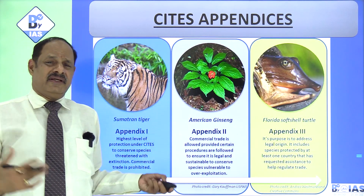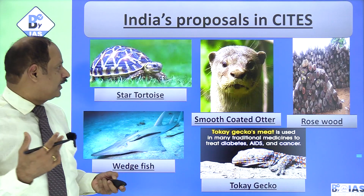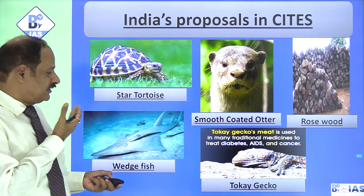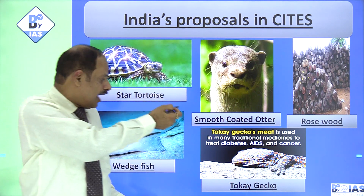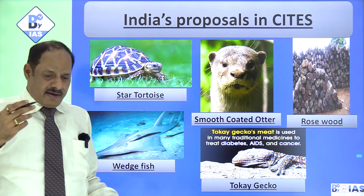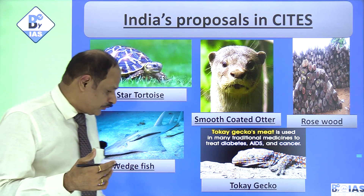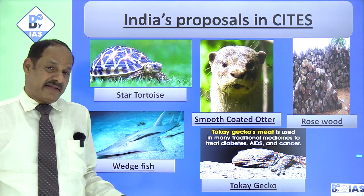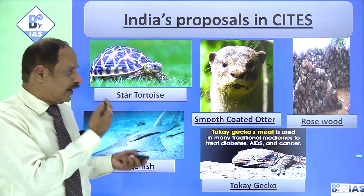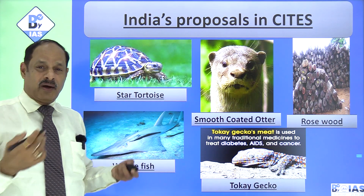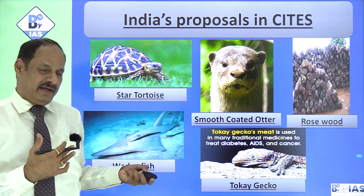Every country on an annual basis gives proposals to CITES to list their plant, animal, and other species. India's proposals to CITES include: the star tortoise, the wedge fish, the smooth-coated otter, rosewood, and the tokay gecko — which is important for its medicinal value, supposedly able to cure AIDS, diabetes, and even cancer. These five species become very important, so study a little background on each and why India sent proposals for them.